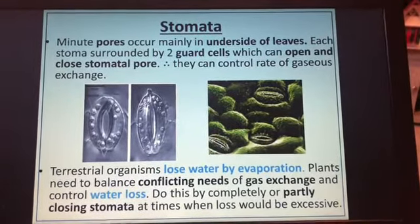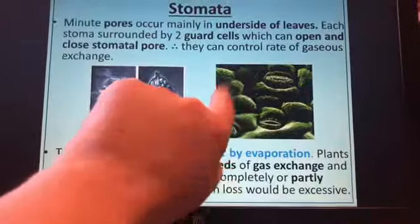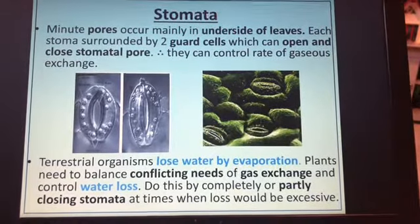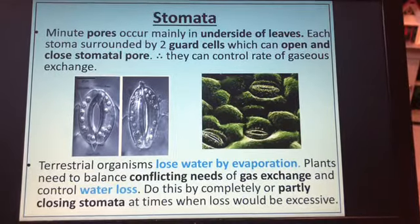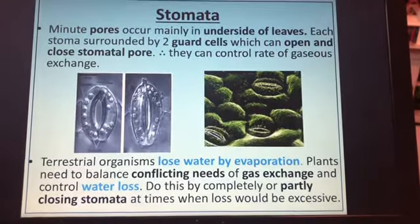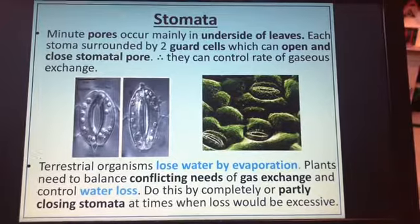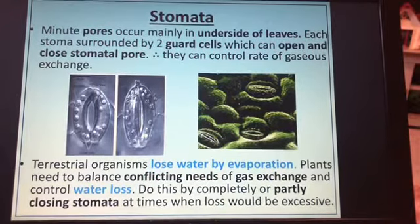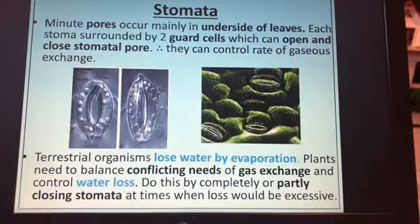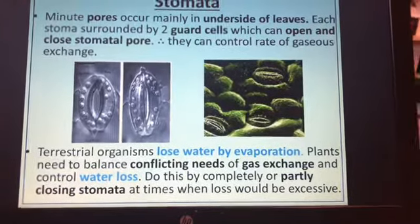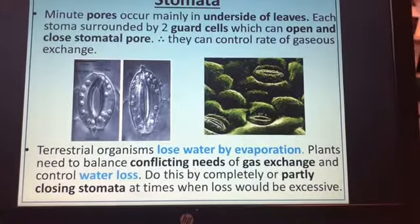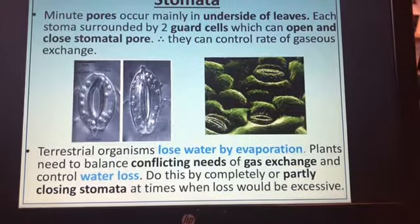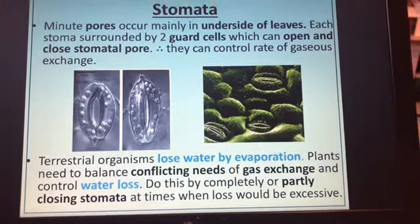Looking at stomata more closely: stomata are little pores mainly on the underside of the leaf, because that's more sheltered from the wind. Each stomatal pore is surrounded by two guard cells, which can open and close the pore to control the rate of gas exchange. Because plants are terrestrial organisms, just like insects, they lose a lot of water by evaporation, so they need to balance the conflicting needs of gas exchange and water loss control. They can close the stomata at times when water loss would be so excessive that it wouldn't be worth keeping them open.